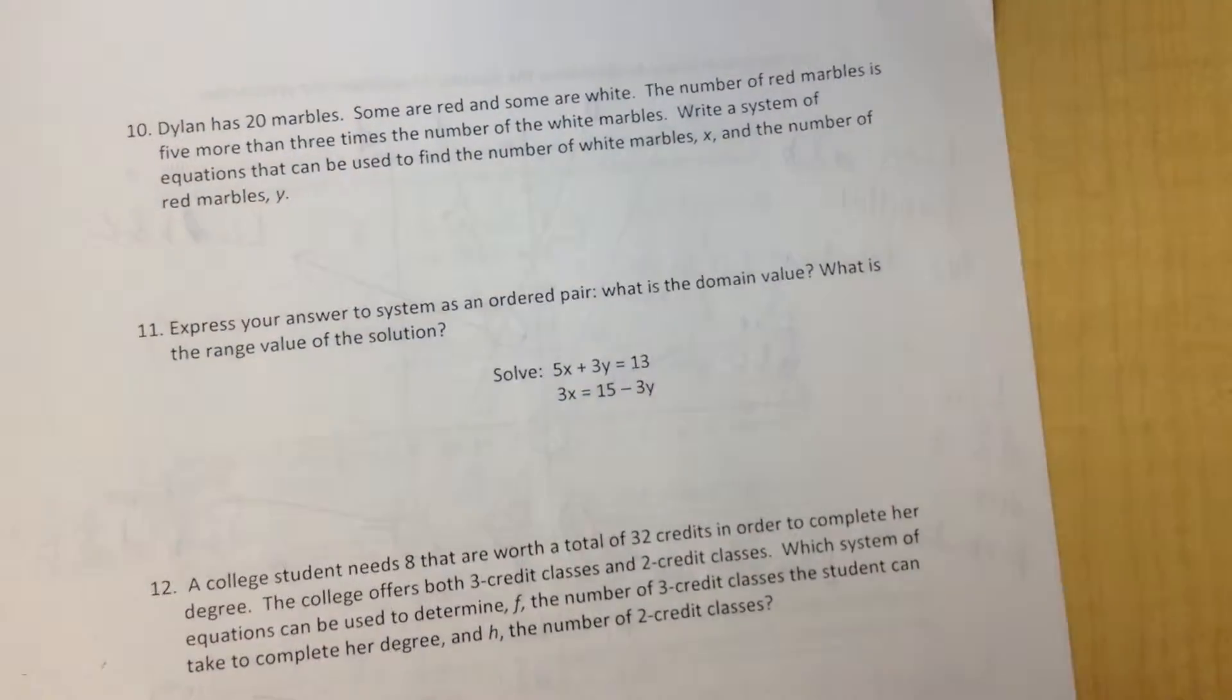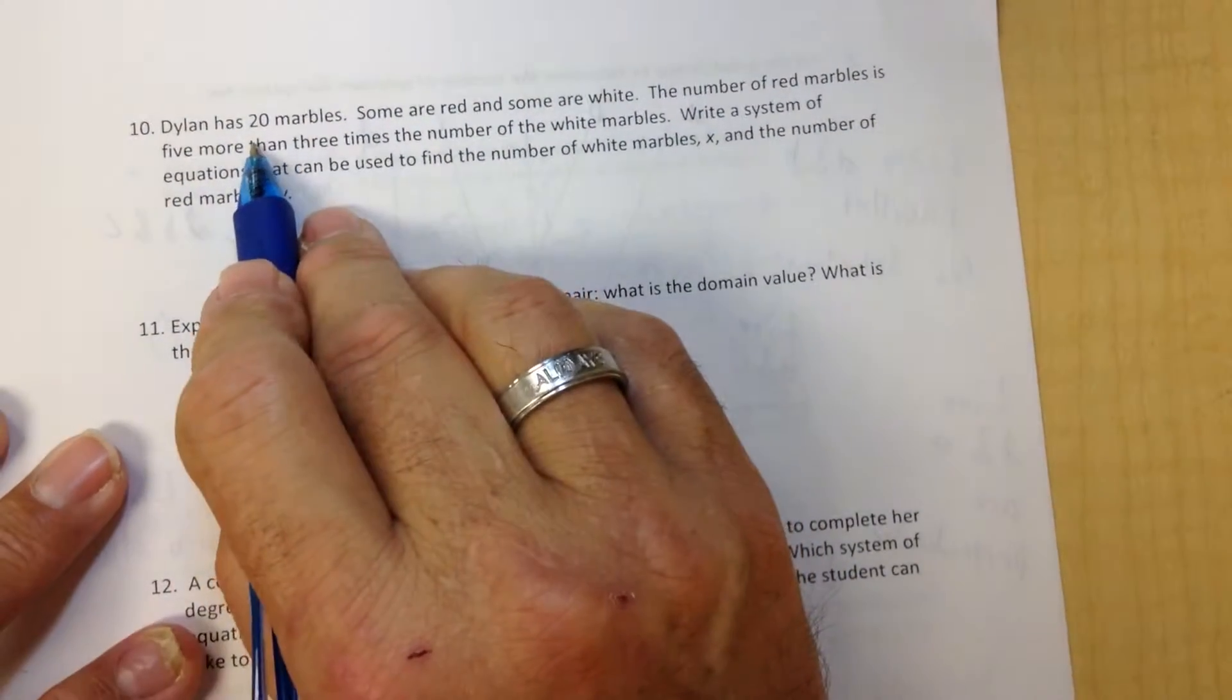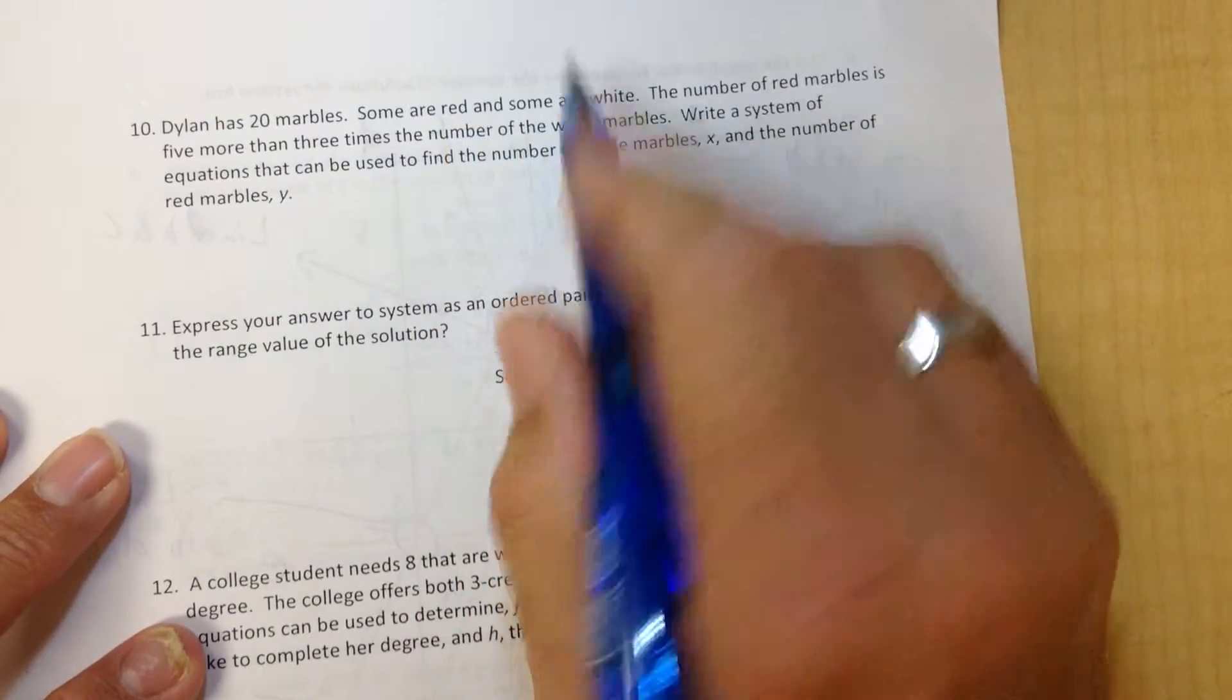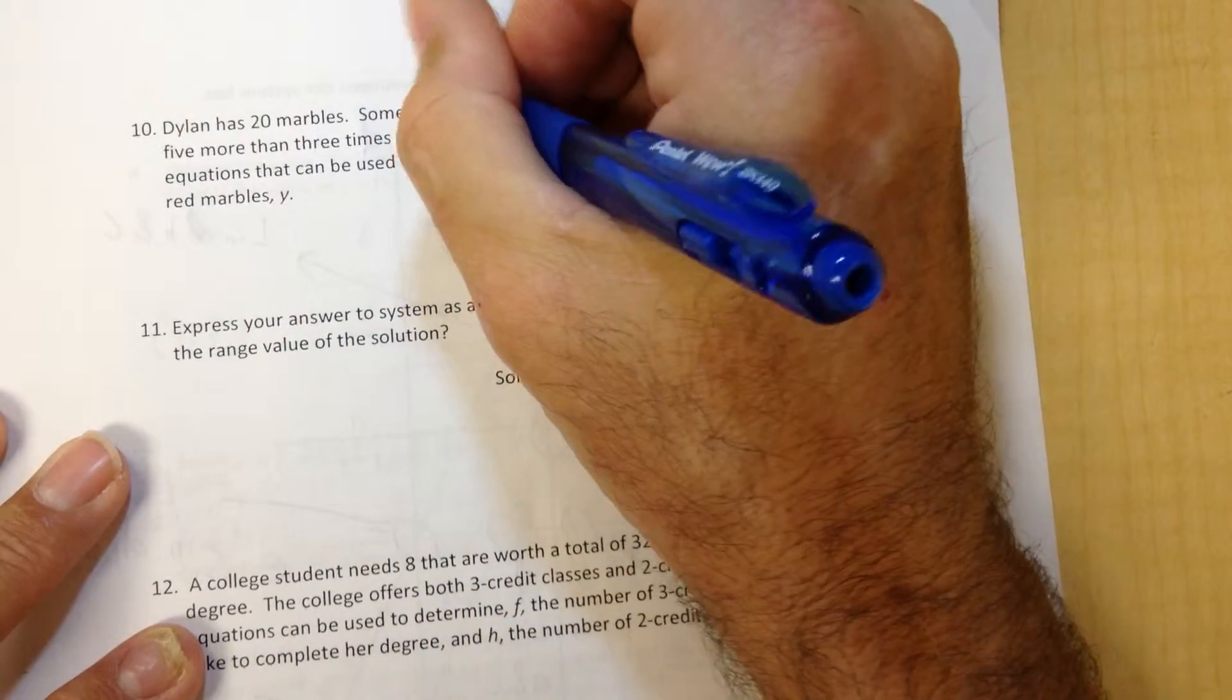Okay, number 10. Dylan has 20 marbles, some are red, some are white. I'm going to let... we'll just use R and W.